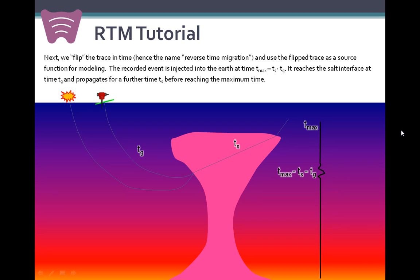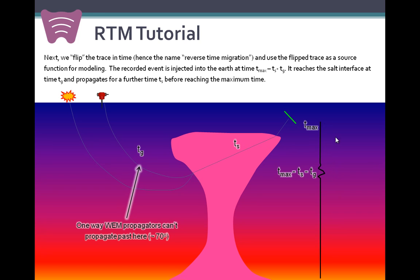The first step in RTM, where we get the name reverse time migration, is to take the recorded time data, the recorded time trace, and flip it in time. We actually use that flipped trace as a source function input for modeling. We inject this source function into the Earth — it propagates for TG seconds to reach the flank of the salt, and an additional TS seconds before we reach the end of the source function. It's worth pointing out that if we had done this with a one-way WEM propagator, the wave would have been attenuated where the angle with respect to the vertical exceeds 70 degrees.